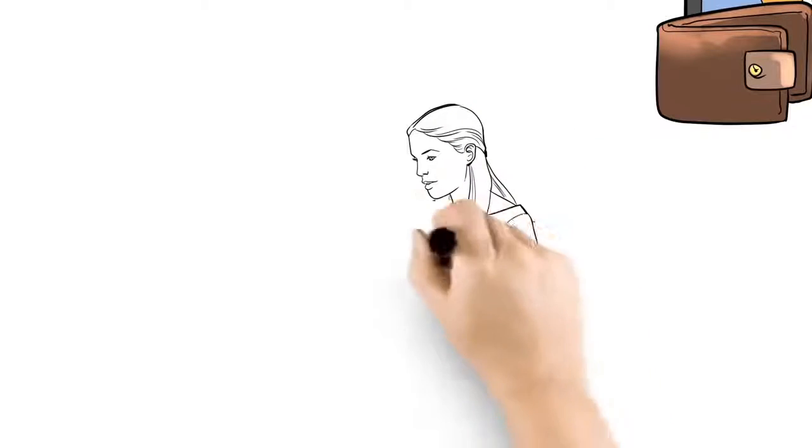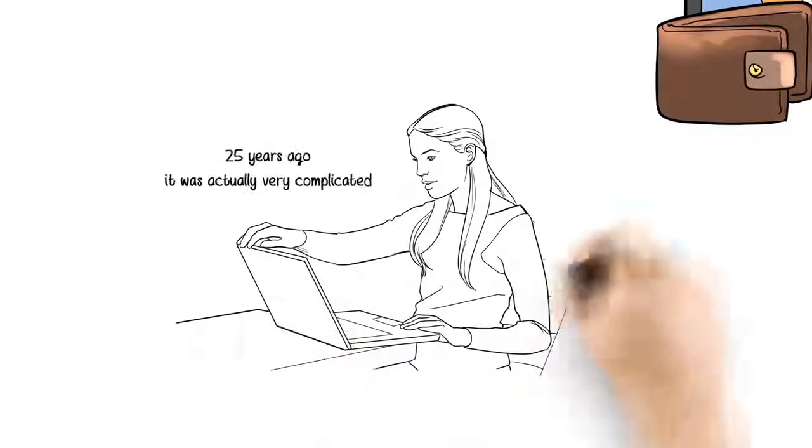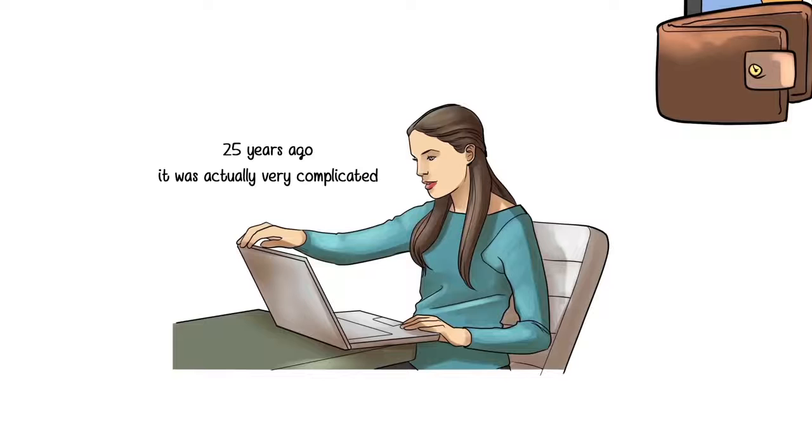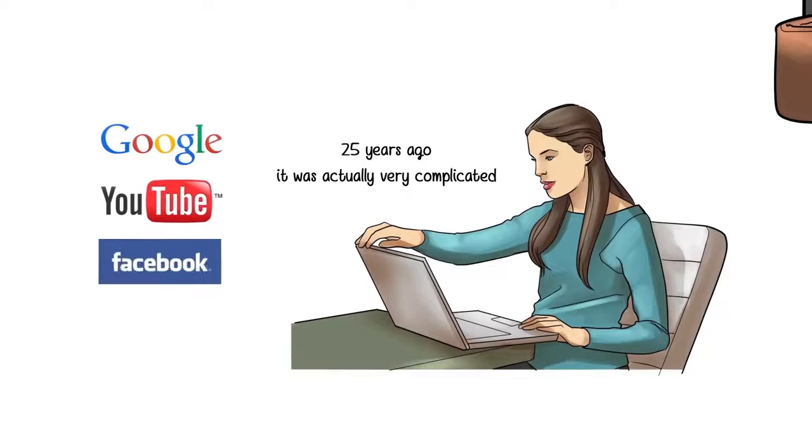The internet is used by everyone now because it's easy. 25 years ago, it was actually very complicated. Now there are thousands of companies like Google, YouTube, Facebook and Gmail that make it easy to use. Billions have been invested in these companies.